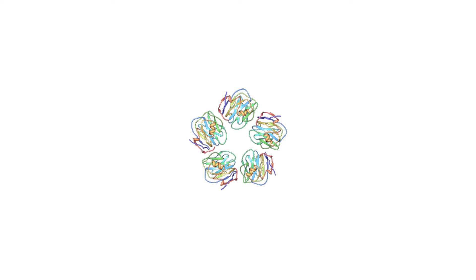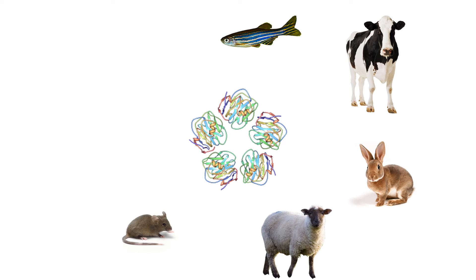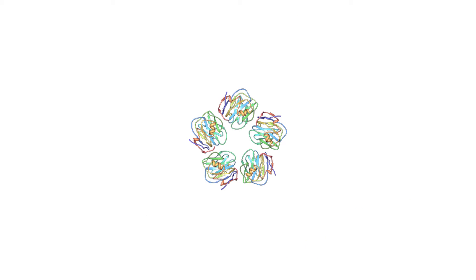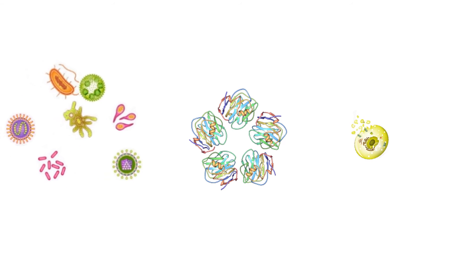The fact that CRP is a highly conserved protein throughout a huge phylogeny of species shows us that this is a very important protein. And of course it is if it gets rid of invading pathogens and dying cells.